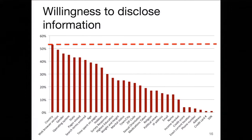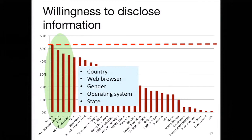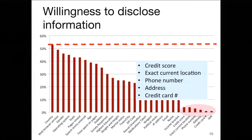When we asked people how willing they were to disclose information — averaged across all conditions — the red dotted line at the top shows that for most types of information, fewer than 50 percent of participants were comfortable sharing it at all. At the top of the spectrum, people were relatively willing to share what country they're from, what web browser they were using, their gender, their operating system, and what state they live in. At the opposite end, we see credit score, exact current location, phone number, address, and credit card number — people were very reluctant to share those.